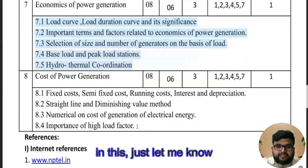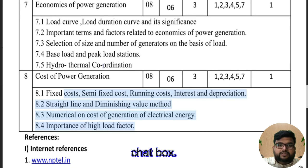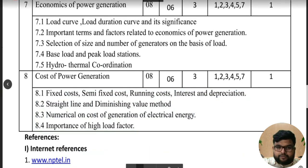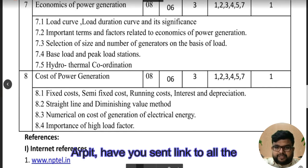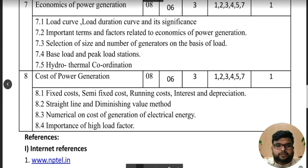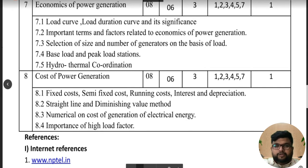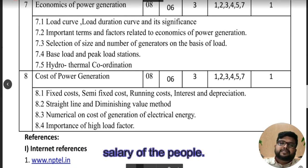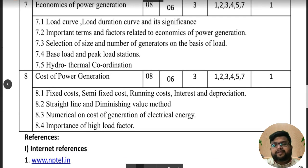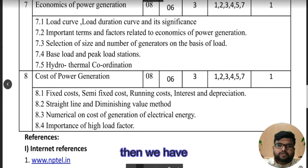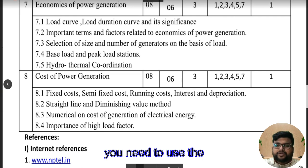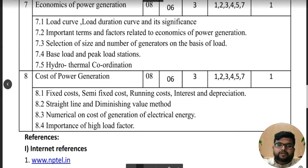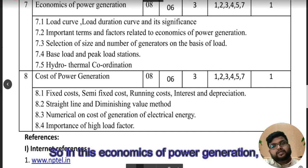If you have any doubt, let me know, or we go ahead to chapter eight — the last chapter for our revision. Moving ahead to chapter eight: the points discussed about cost — salary of people — are now given the name 'fixed cost', then we have semi-fixed cost, and then the cost of using fuel, that is running cost. Use the PDF I shared earlier for this concept.